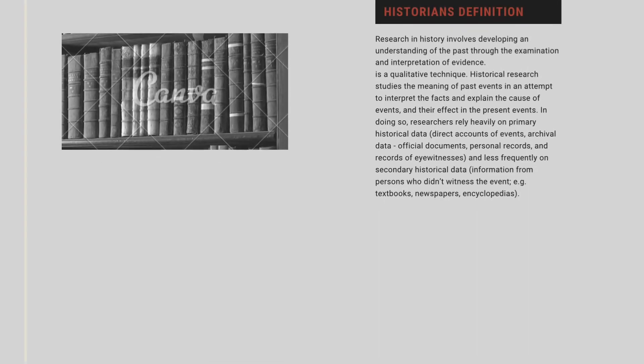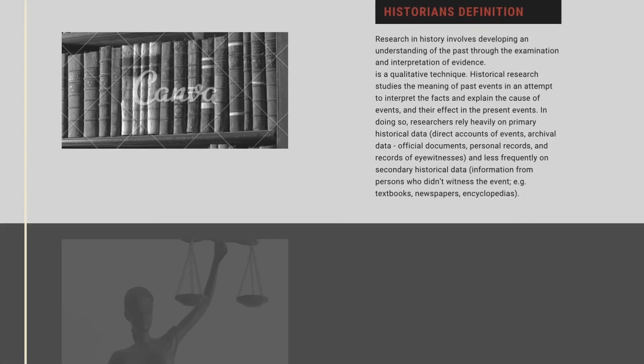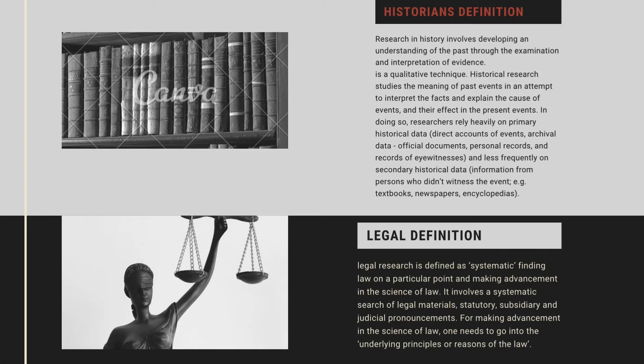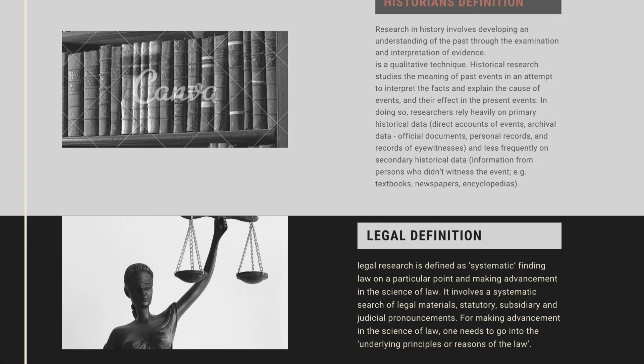The next conceptualization is the historical definition of research, which shows that research in history involves developing an understanding of the past through the examination and interpretation of evidence. For the legal definition, legal research is defined as the systematic finding of law on a particular point and making advancement in the science of law. It involves a systematic search for legal materials, statutory subsidiaries, and judicial pronouncements — so it is still systematic.